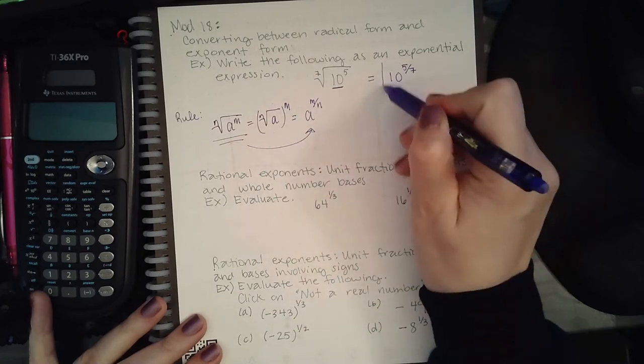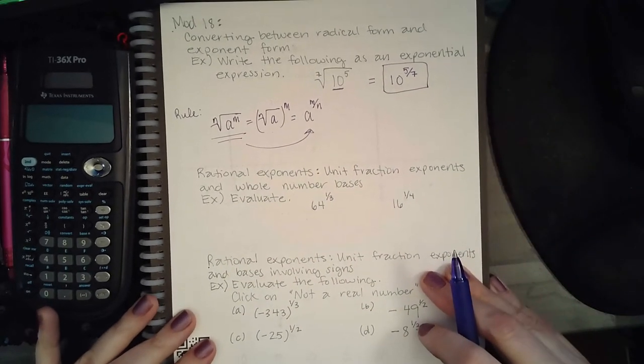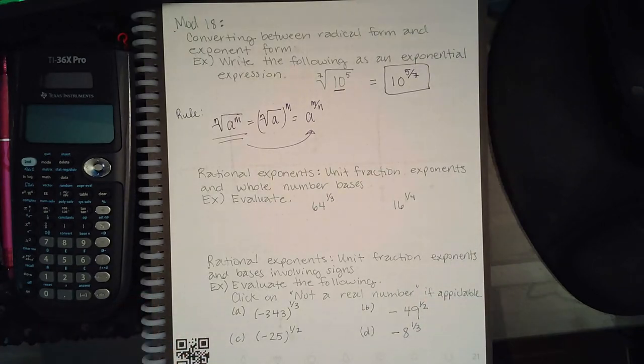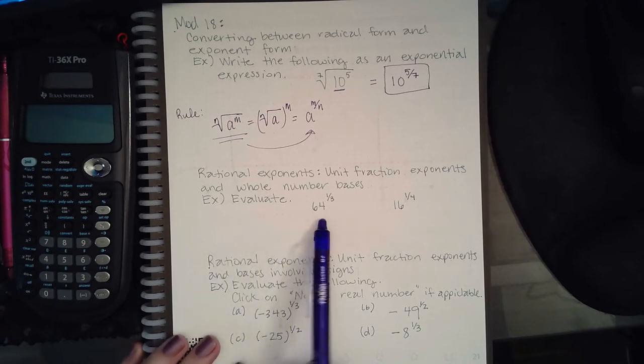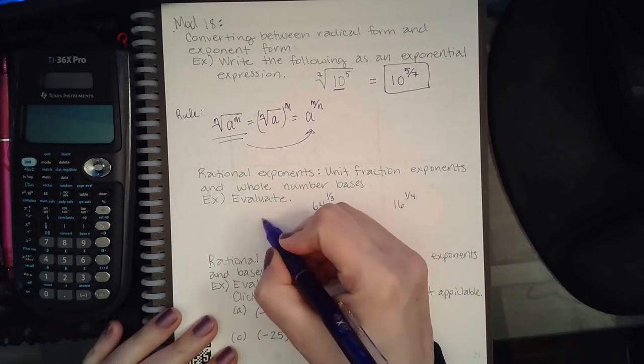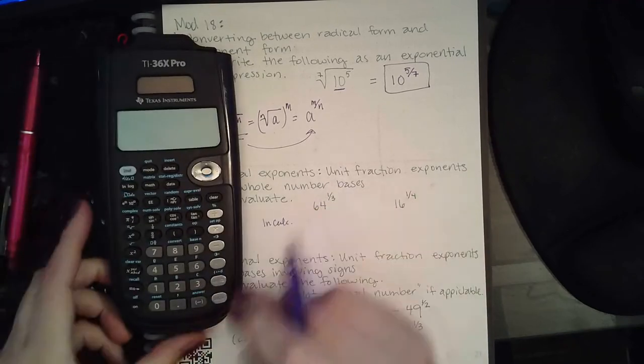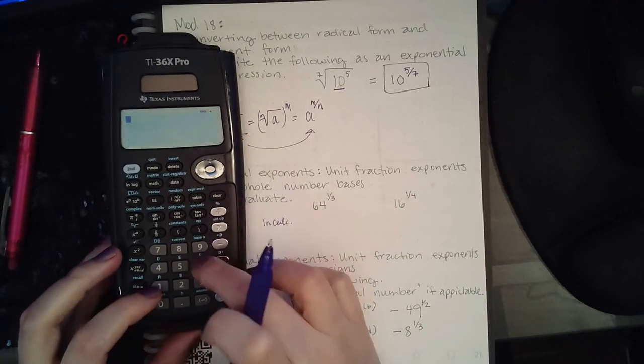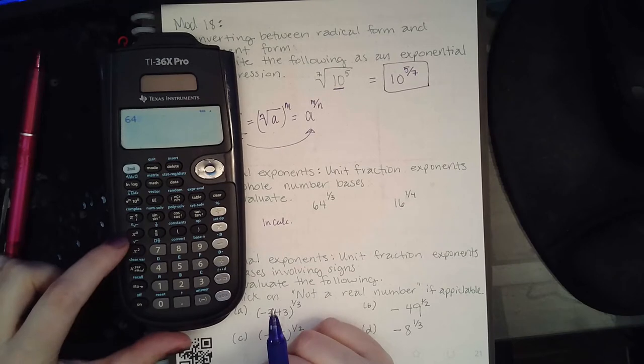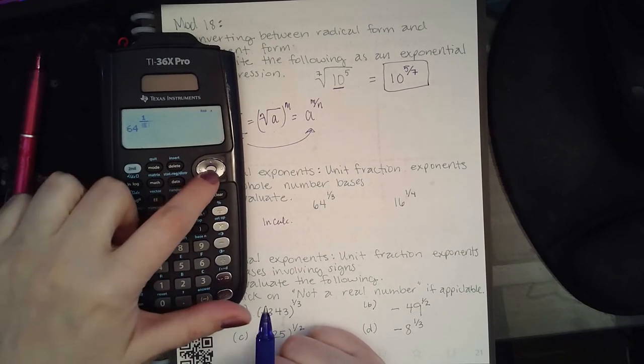Now the next topic: rational exponents, unit fraction exponents, and whole number bases. There are two ways to evaluate these. One, I can type it straight into the calculator: 64 as my base, hit the exponent button, then type in a fraction 1 over 3.